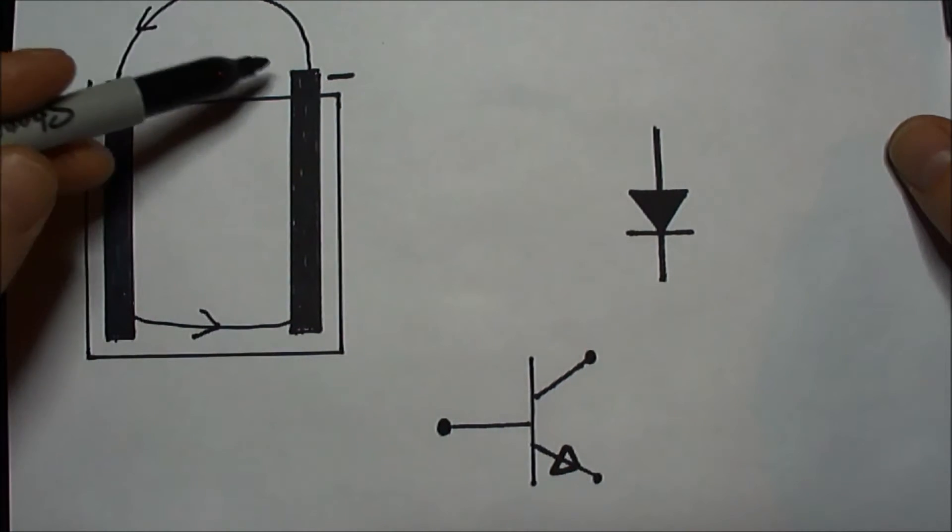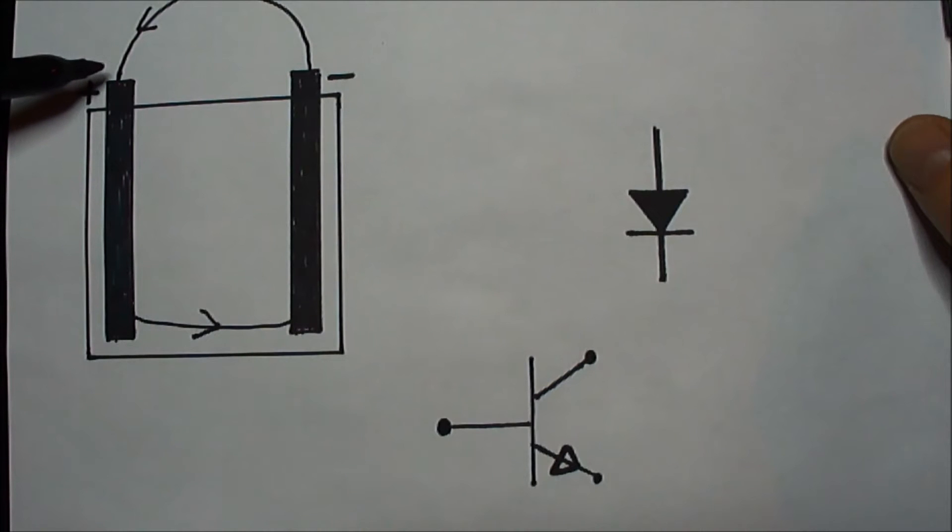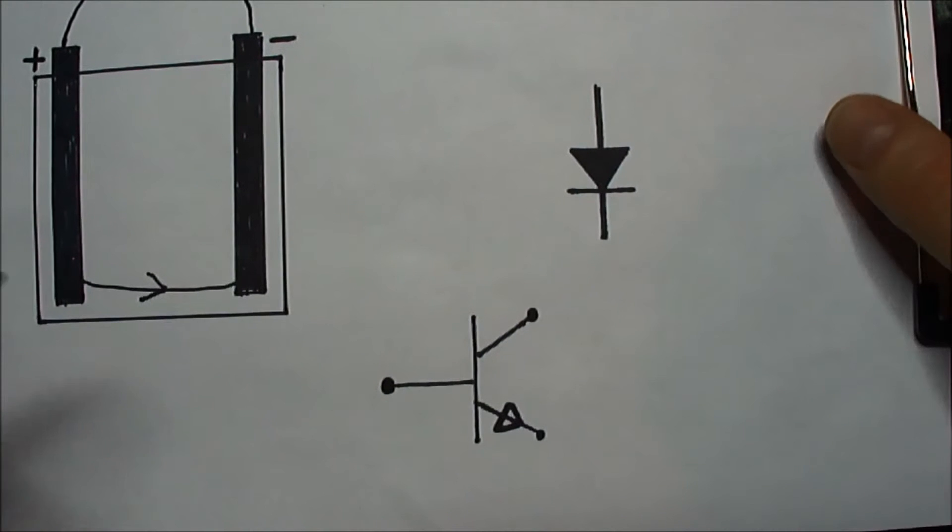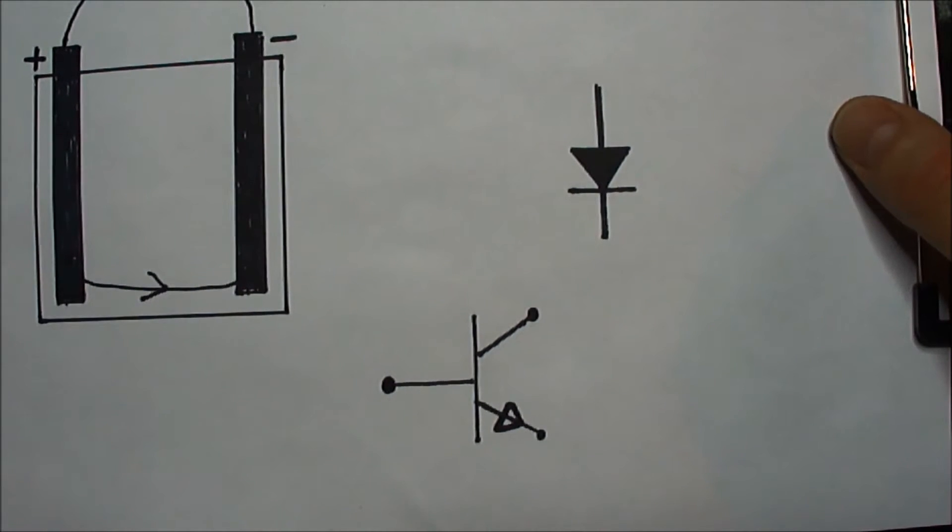So current flows from negative to positive on the outside. Now as far as circuit diagrams go, they're all drawn in the water analogy.